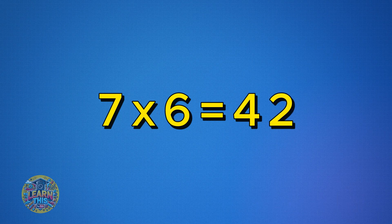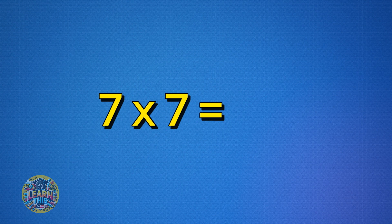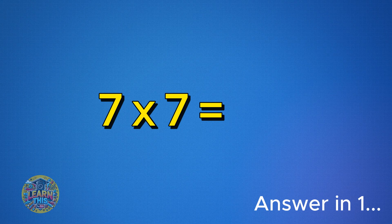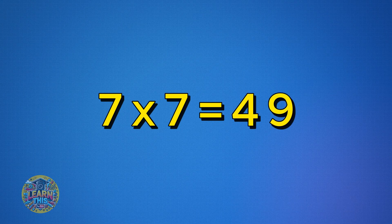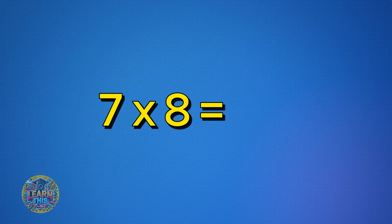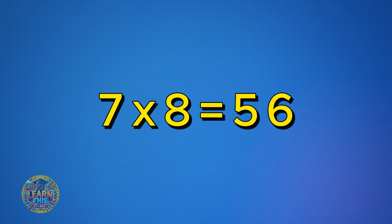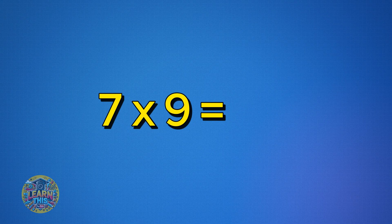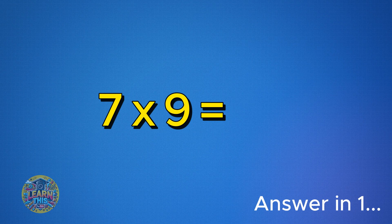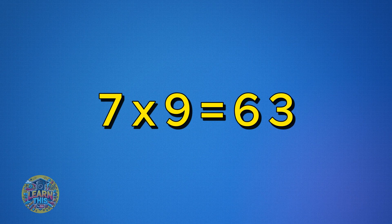Seven times six is 42. Seven times seven is 49. Seven times eight is 56.